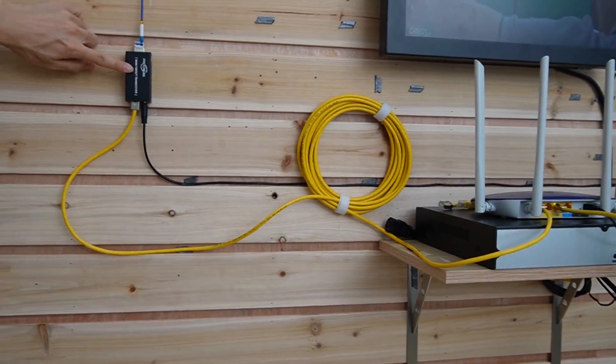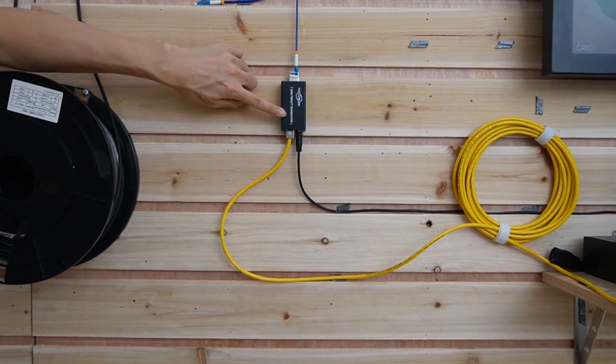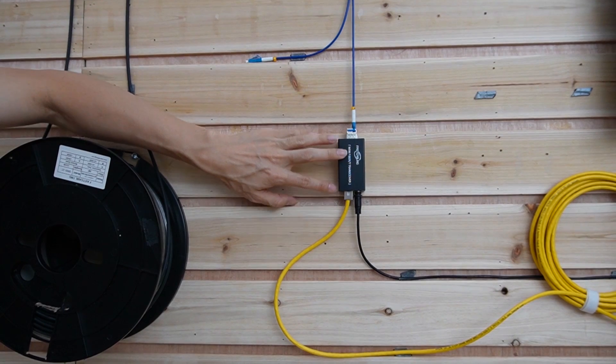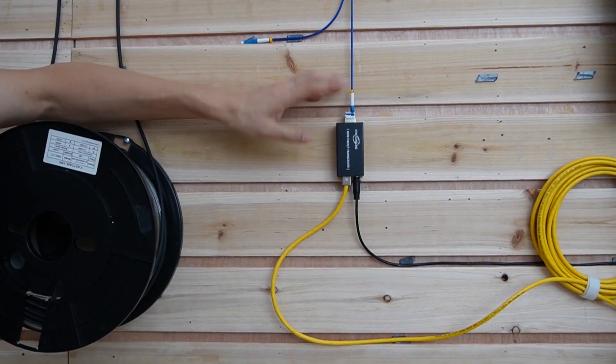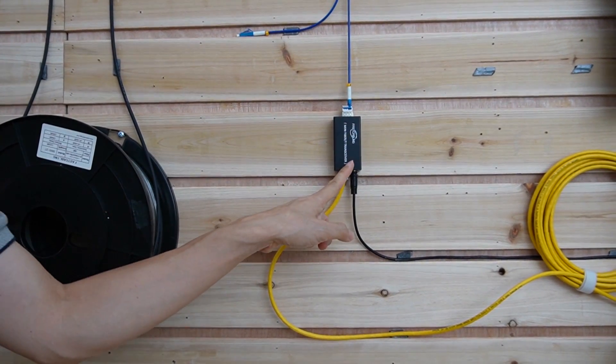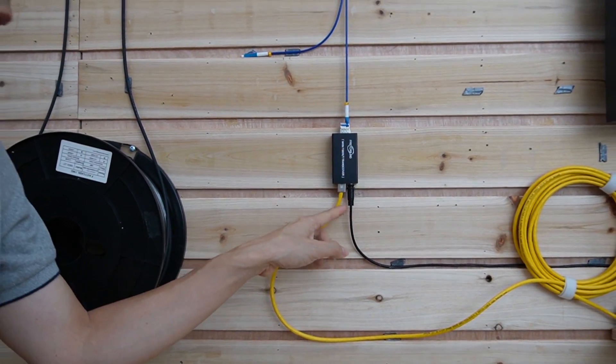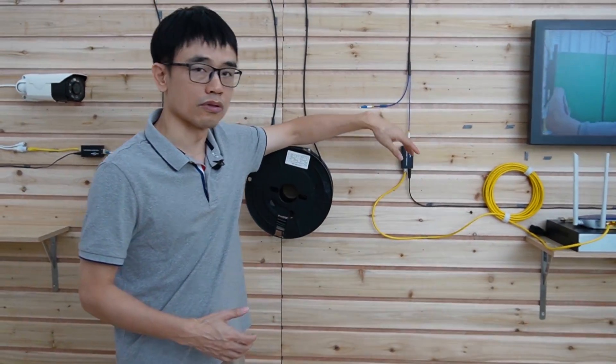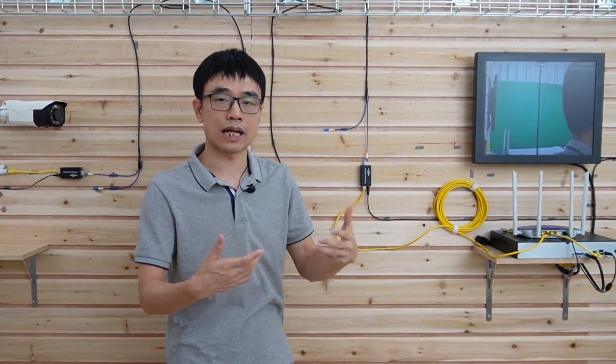So in this case, we need to use this media converter. The media converter will convert the fiber optic signal to the electronic signal. We got another one just next to the camera. But you see, there's one thing. We need the power source for this media converter, right? Because in some of the applications, the power source may not be available. For example, if we need to place this media converter just outside of the building, there's no guarantee that we have got a power source just outside of the building.